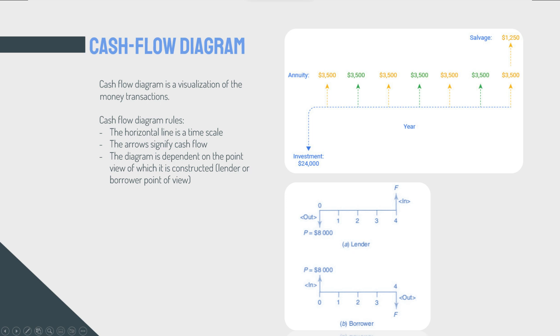The horizontal line is a time scale. The arrows signify cash flow. The diagram, depending on the point view of which it is constructed - it means are you looking at it as a lender or as a borrower? It's different. Your gain as a borrower is a loss for the lender and vice versa.